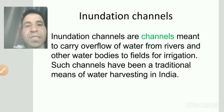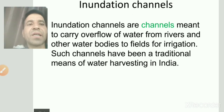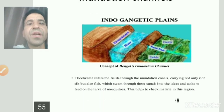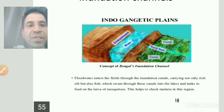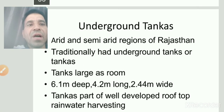West Bengal में inundation channels use की जाती हैं — जिन्हें 'Indonesian channels' भी कह सकते हैं — जो irrigation के लिए traditional method है। यह West Bengal में use किया जाता है। Flood water enters through these channels, जिससे silt आती है जो fish breeding के लिए भी useful होती है। Underground tanks भी बनाए जाते हैं।